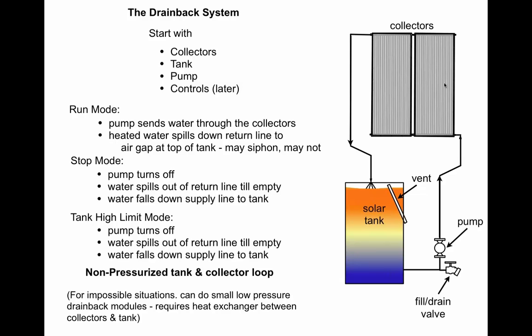We run this system all day long, pumping water through the bottom, spilling back into the tank. At the end of the day, a rain shower, or cloud cover — when we can't gain heat from the collectors — we turn the collector pump off. The water in the return line drains through that air gap at the bottom, and the rest drains backward through the collectors, through the pump, and back into the tank. If you turn the pump off, the water cannot stay in the collectors. So a power failure is a normal operating mode — you do it every day regardless.